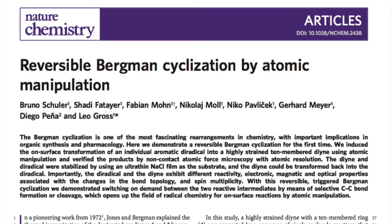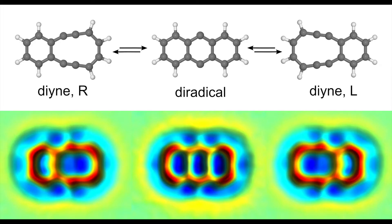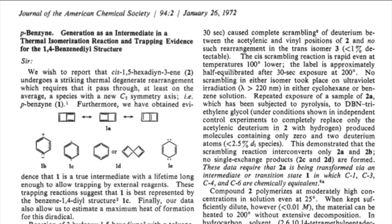A new paper appearing today demonstrates the tool's latest achievement by helping scientists observe an intriguing molecular rearrangement reaction, first described in 1972. The Bergmann reaction — the transformation we just observed here in a single molecule — is a fascinating molecular rearrangement which was discovered in 1972.